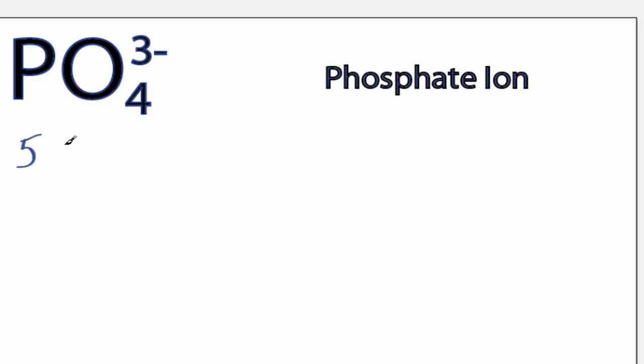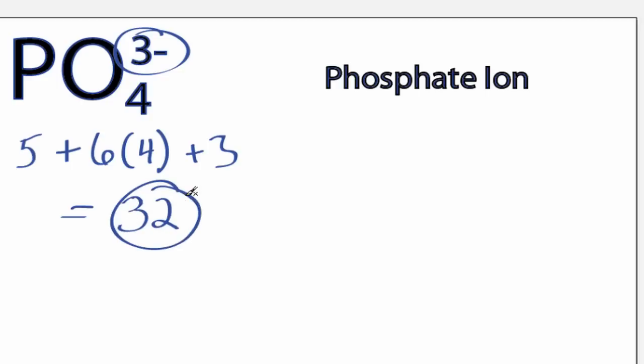Phosphate has 5 valence electrons, Oxygen has 6, we've got 4 Oxygens, and this negative 3 up here means we have 3 additional electrons. 5 plus 24 plus 3 gives you 32, so those are our valence electrons.